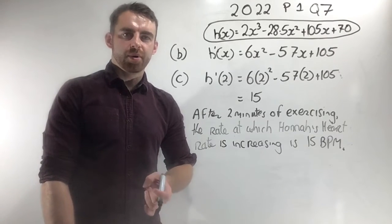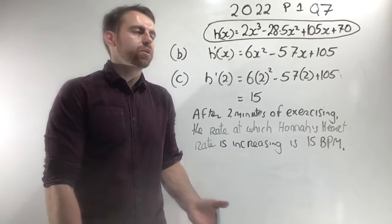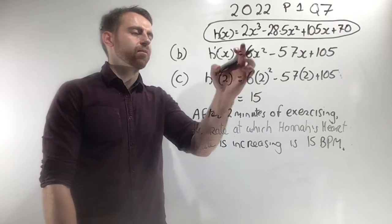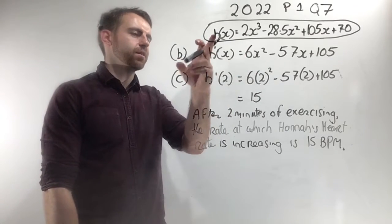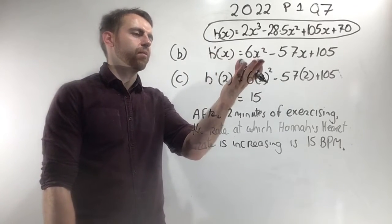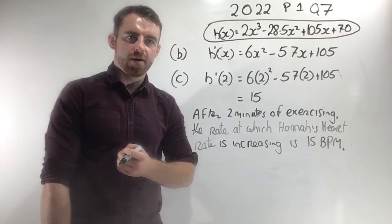In part b, you're simply asked to get the first derivative. So h(x) is the cubic function, and the first derivative h'(x) is 6x² minus 57x plus 105.